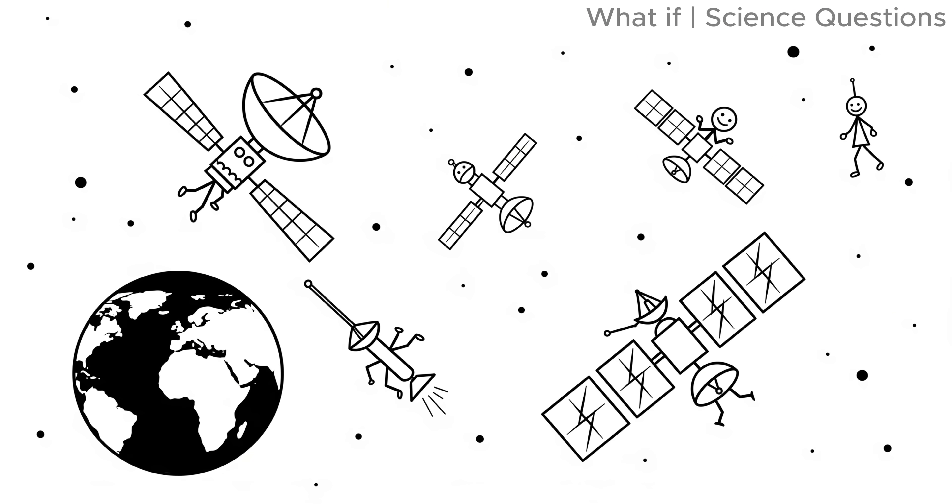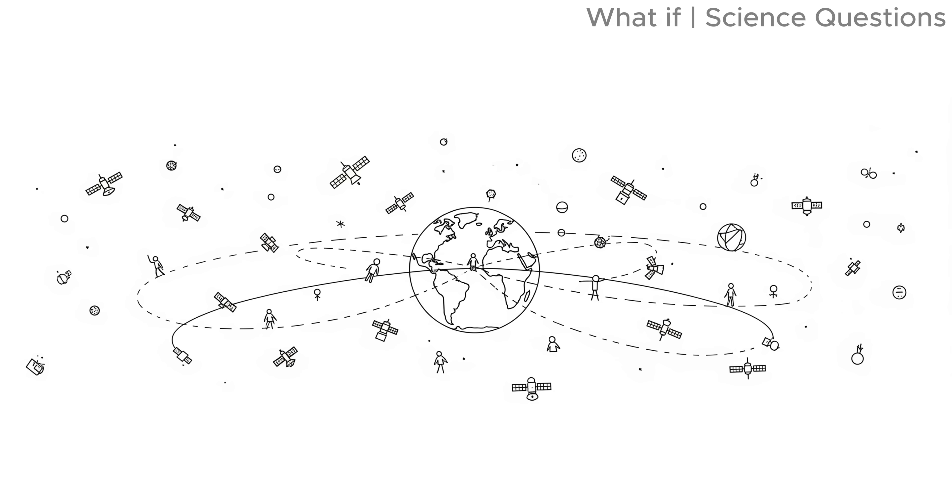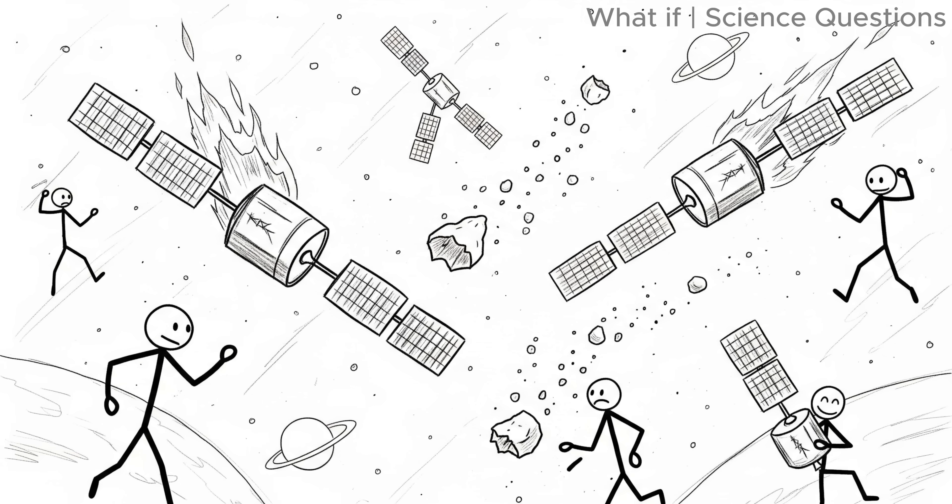And then there are our satellites and probes. Above earth, thousands of dead satellites would continue orbiting, silently circling a planet without observers. But their fates would also be sealed.